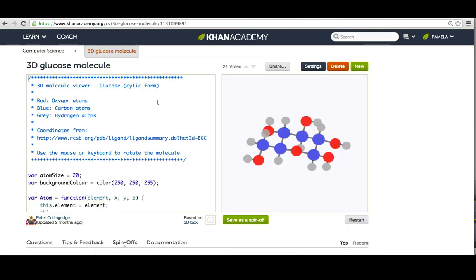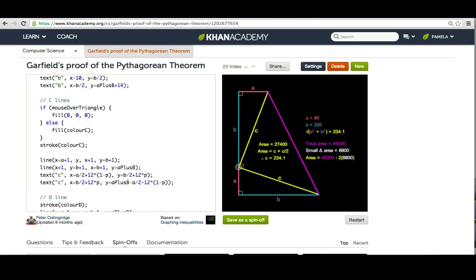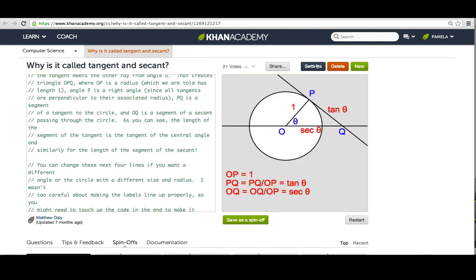For example, if the student's learning chemistry, they could learn programming and then write a program to visualize the molecule like this cool 3D one. Or if they're in math and they're learning trigonometry, they can write these visualizations to show what they've learned.